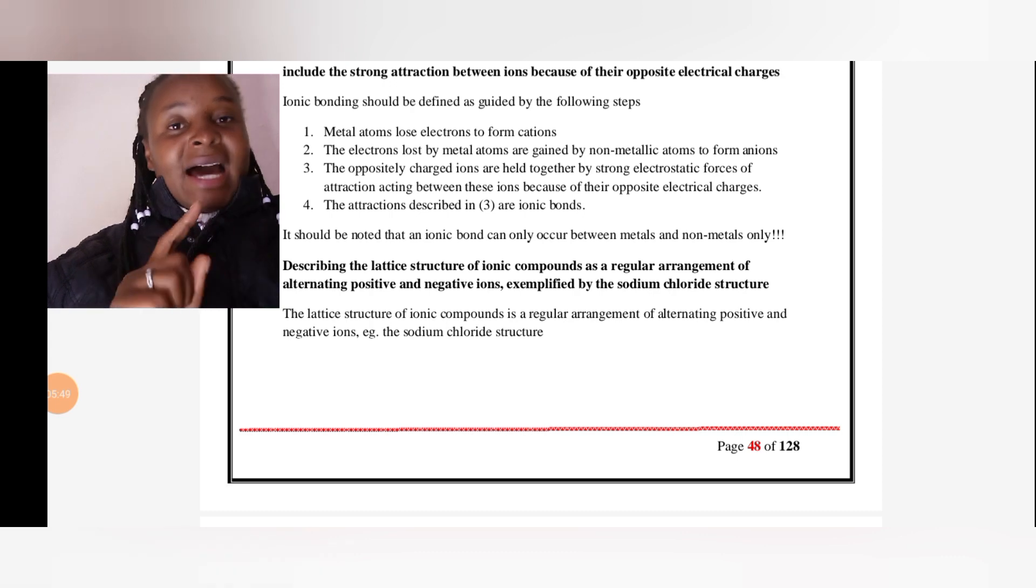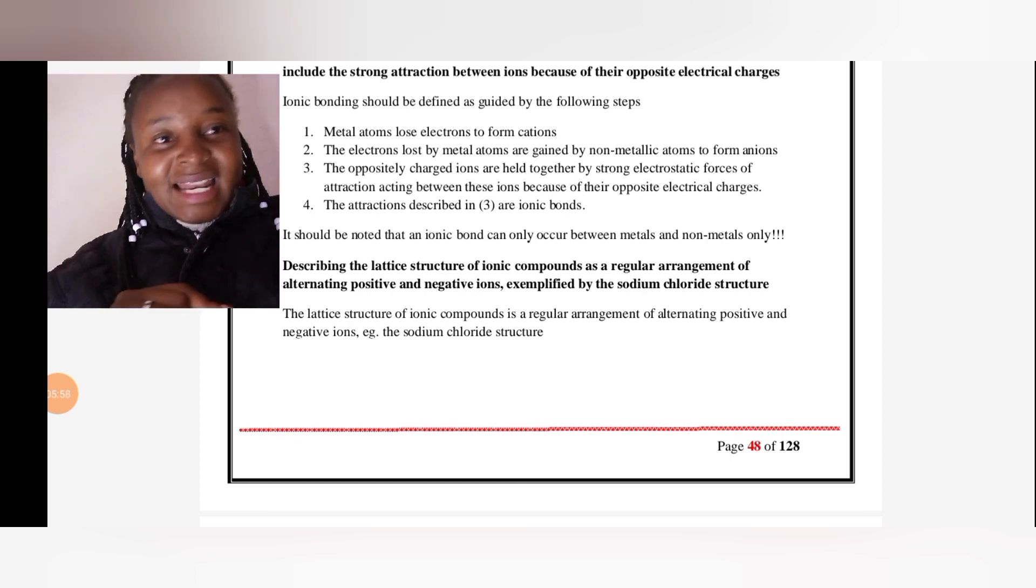An important thing to note is that an ionic bond can only occur between metals and non-metals only. The next thing we need to look at is the lattice structure.